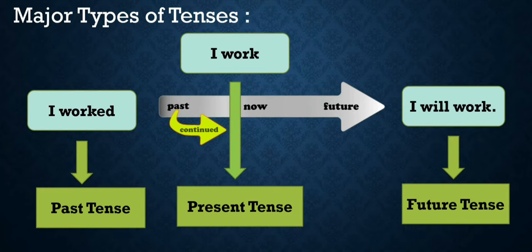Here, I worked is past tense. I work is present tense. And I will work is future tense. It is important to understand the different tenses when it comes to English language.